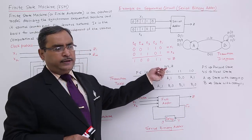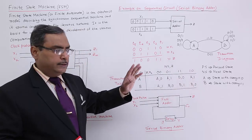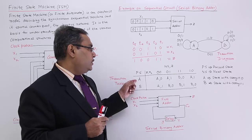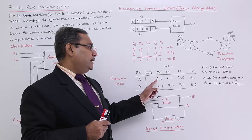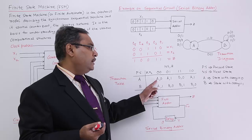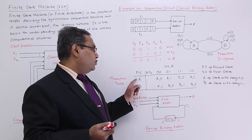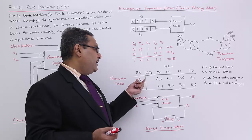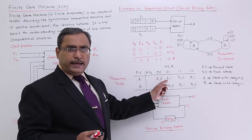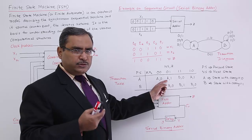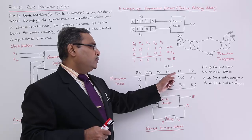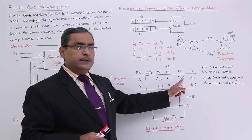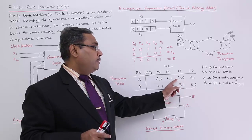If I am at state A — meaning previous carry is 0 — and the input is 0,0: no carry is generated, sum bit is 0, and I remain in state A. For input 0,1: doing 0+0+1=1, I stay in state A with sum 1. For input 1,1: doing 0+1+1=2, which is binary 10, so sum bit 0 with carry — I transition to state B.